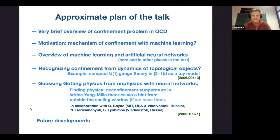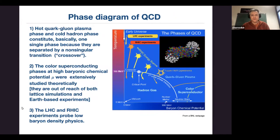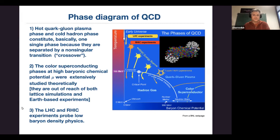The big motivation for our deviation towards machine learning from standard methods is the phase diagram of QCD — quantum chromodynamics, the theory of strong interactions. We have two types of constituents: quarks and gluons. Neutrons and protons are made of quarks, coupled together via gluon interactions. The theory is quite simple if you write it in one line, but we totally don't understand how it behaves.